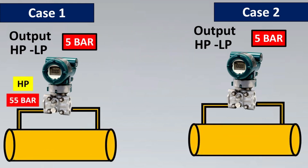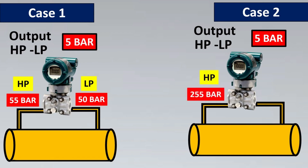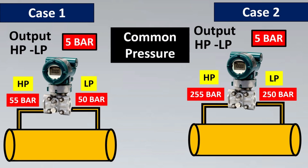For the first transmitter, the HP side is experiencing 55 bar and the LP side is experiencing 50 bar, so HP minus LP is 5 bar. For the second transmitter, the HP is experiencing 255 bar — which is pretty huge — and the LP side is experiencing 250 bar, so the output is again 5 bar. These both are not experiencing the same pressure.